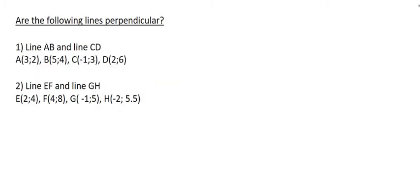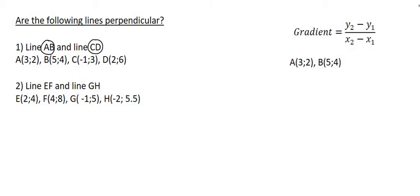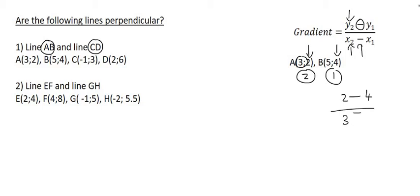Let's try a few examples. The question asks us: are the two lines perpendicular? Here we have line AB and line CD. Let's work out the gradient of each of them. For line AB, I'm going to call point A number 2 and point B number 1. Using the gradient formula: the y value of point 2 is 2, minus the y value of point 1 which is 4, over the x value of point 2 which is 3, minus the x value of point 1 which is 5. That gives an answer of 1. So the gradient of AB is 1.